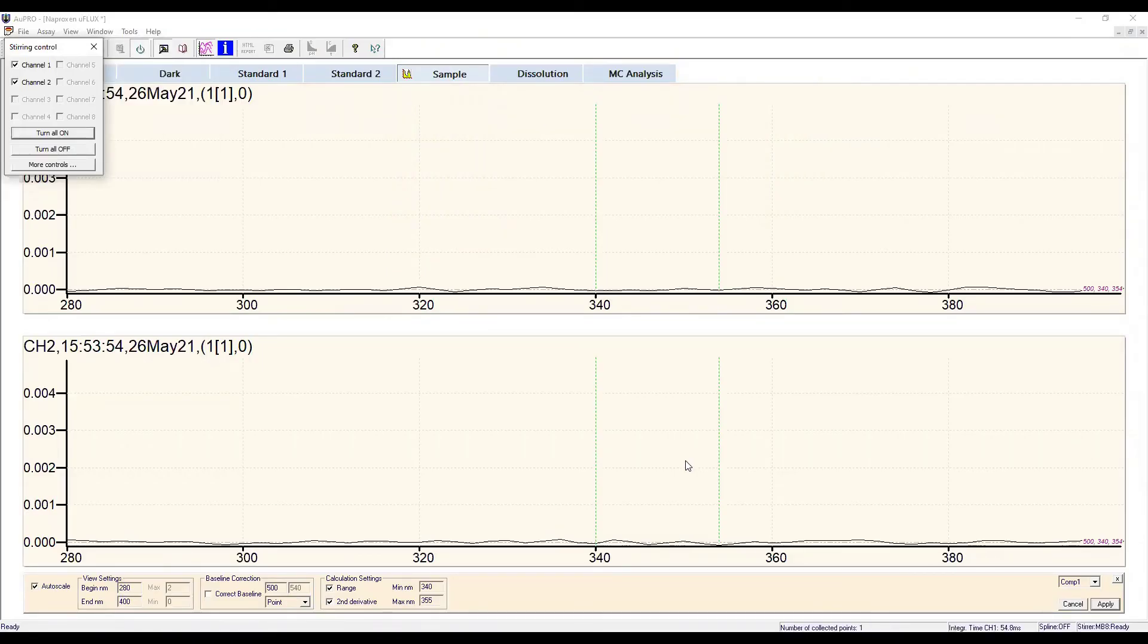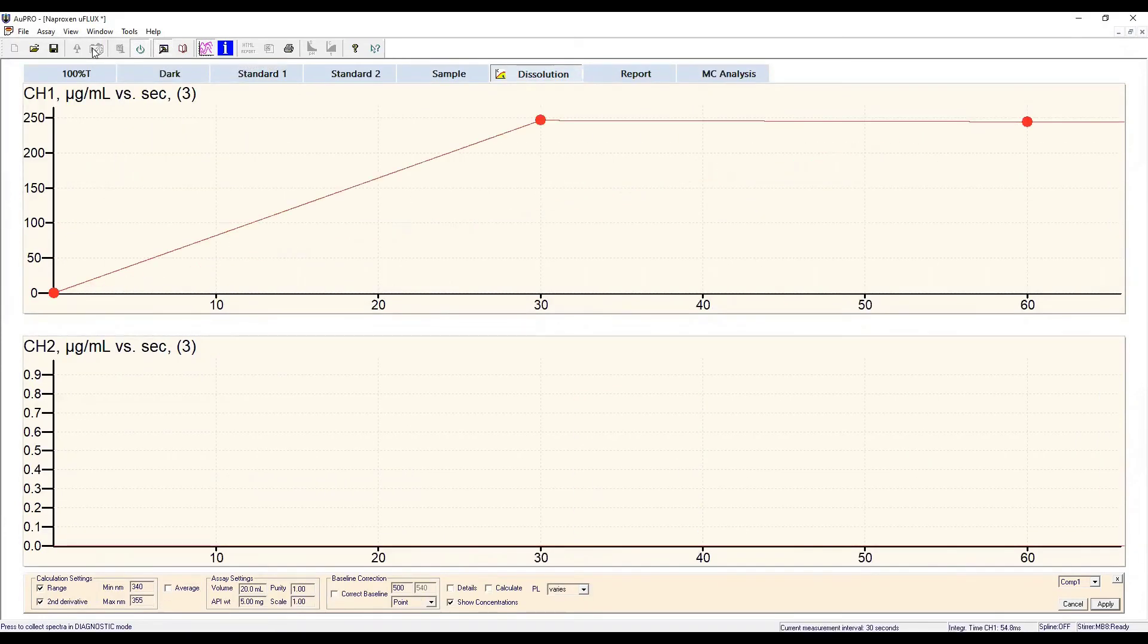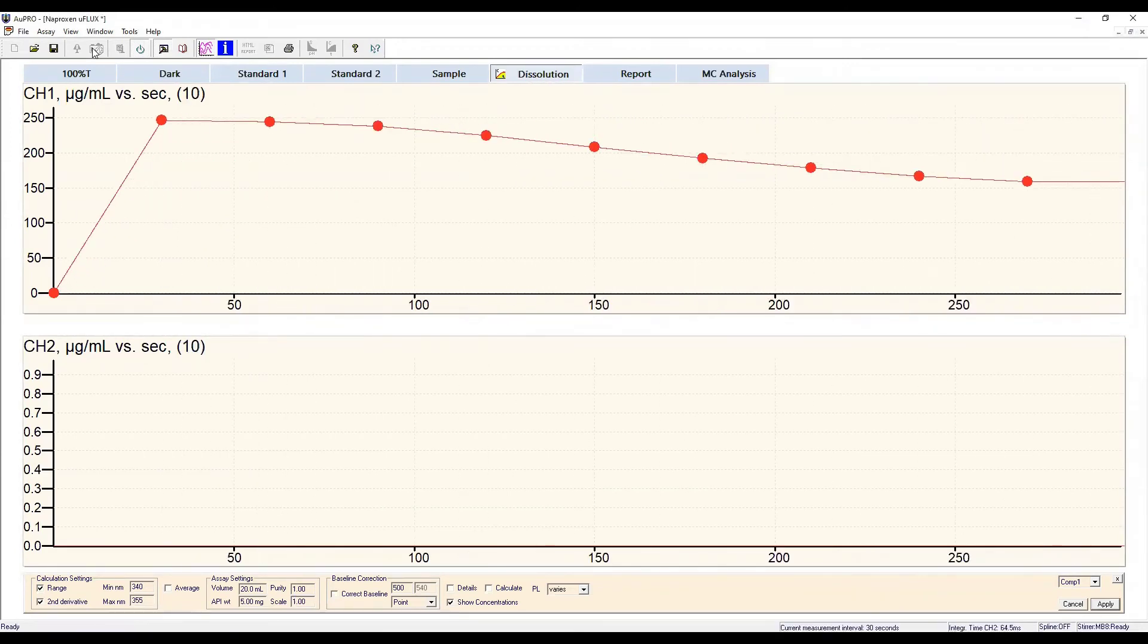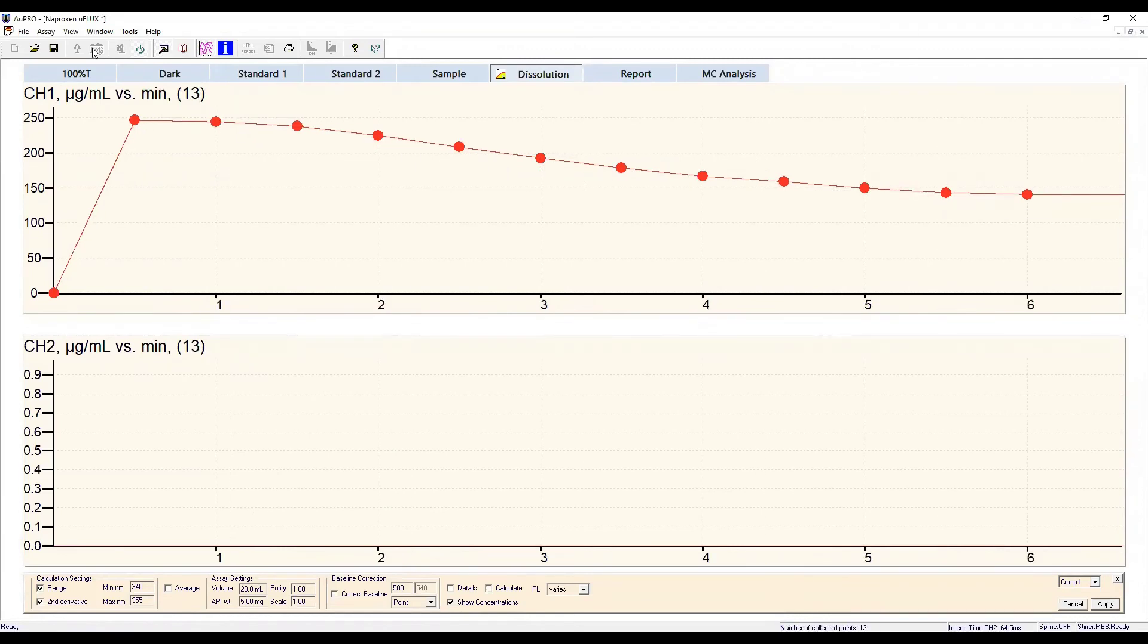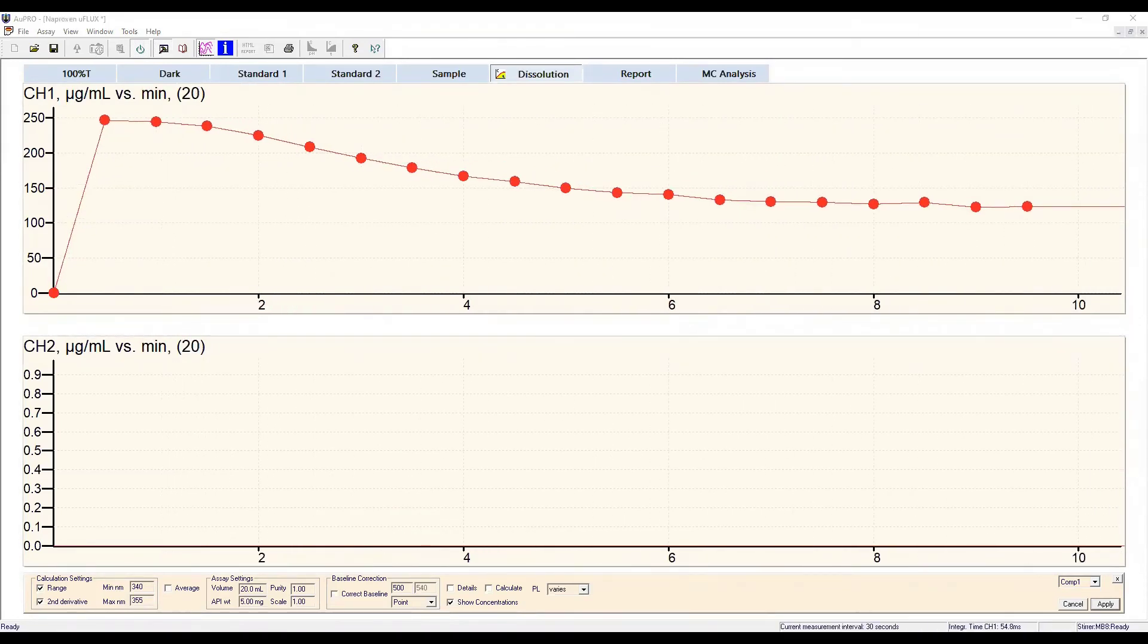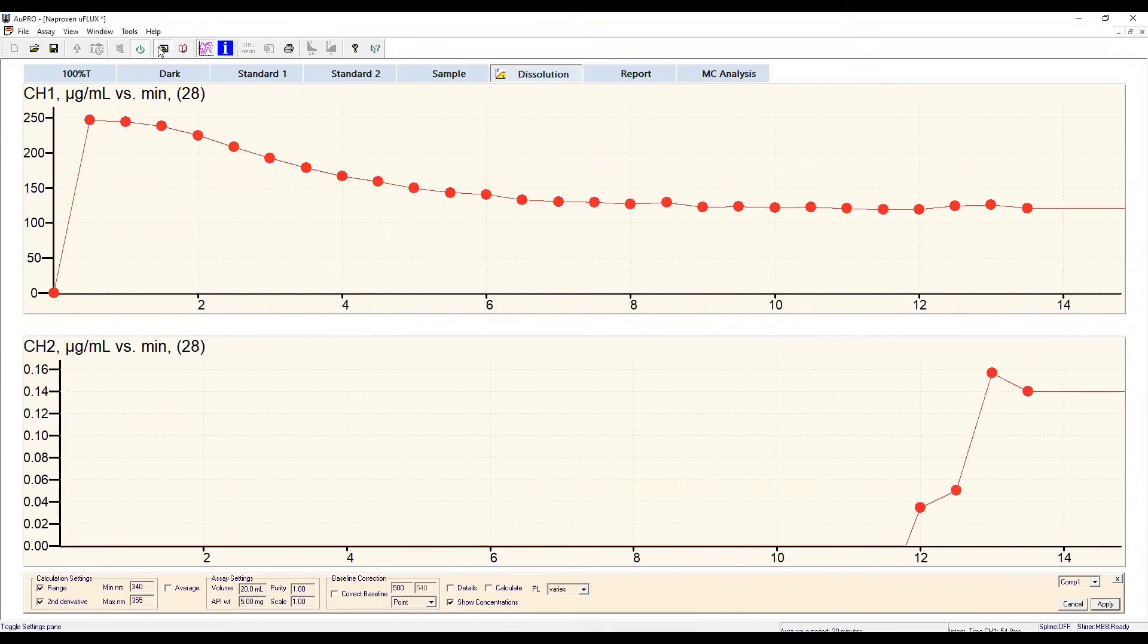The instrument starts to collect spectra, and the dissolution curves are populated in real time. This section of the data collection is sped up. In the donor chamber, addition of the sample as a concentrated stock solution briefly supersaturates the sample, but we start to see precipitation within the first few data points, and by 10 minutes, the concentration reaches the intrinsic solubility.